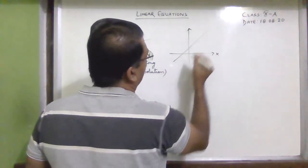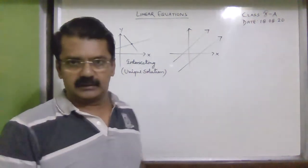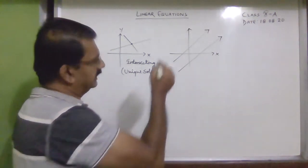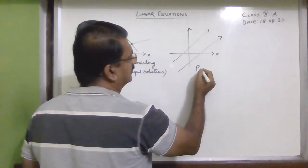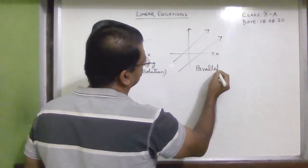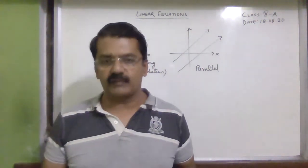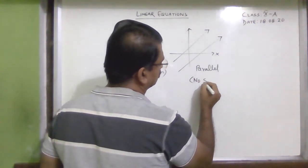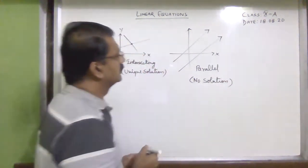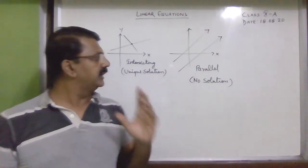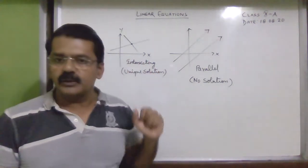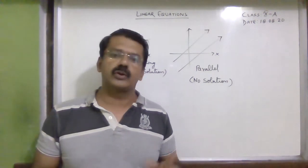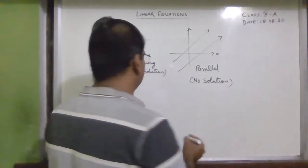Suppose you draw the graph of two linear equations and the lines are parallel. When lines are parallel they do not intersect, meaning we don't have any value of x or y satisfying both equations. This is called no solution. So intersecting lines give a unique solution, and parallel lines give no solution.